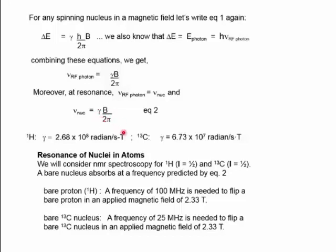A comment about gamma, the magneto-gyric ratio: its value depends on the nucleus. We'll be examining the NMR of two nuclei — H1 and C13. H1 is the most abundant isotope of hydrogen that occurs naturally. C13 is the less abundant isotope of carbon, present naturally at about 1%. For H1, gamma equals 2.68 × 10⁸ radians per second Tesla. For C13, gamma is 6.73 × 10⁷ radians per second Tesla. Tesla is the unit used to measure magnetic field strength.